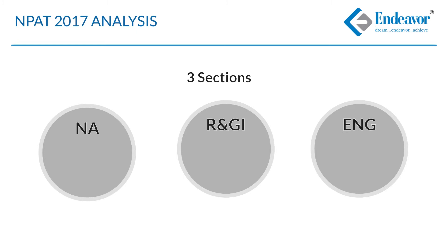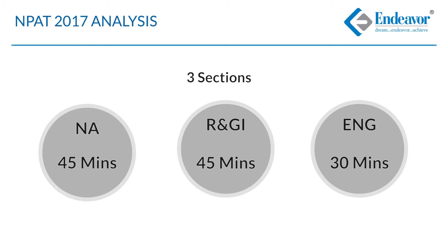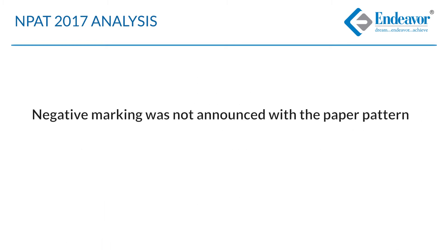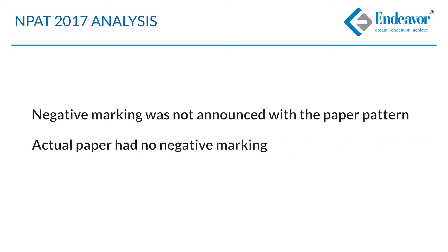There were sectional time limits and the same was maintained by the exam. The first section had a time limit of 45 minutes, reasoning was again 45 minutes, and English proficiency was 30 minutes — this was as per expectation. However, there was slight confusion regarding negative marking, as there was no mention of it at the time of the announcement. On the actual day of exam, it was clearly mentioned that there is no negative marking, which would have slightly surged the number of attempts at the last moment.